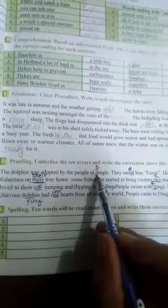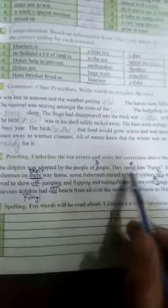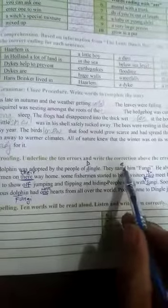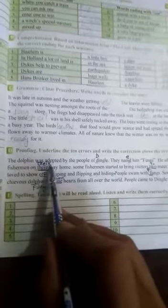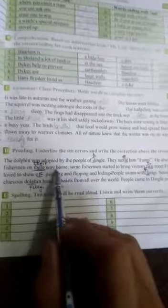Next jo hai woh aapki proof reading hai. Yeh underline the errors. Thik hai. The dolphin was captured by the people of film. Next, bishier, diyar. Next hai yahan the, rula, trawat, drop. Thik hai.